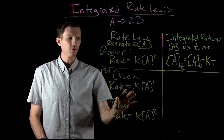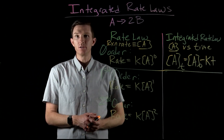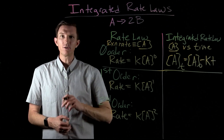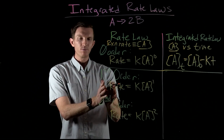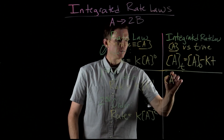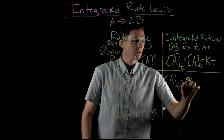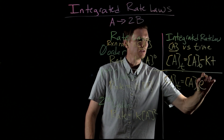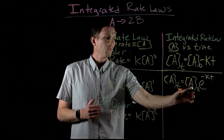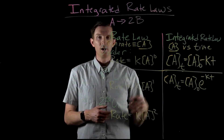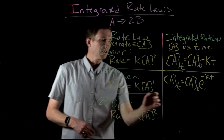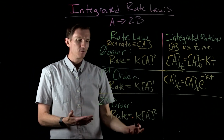For a first order reaction, there is a dependence of rate on the concentration of A, so the way A changes over time is different from the zero order case. Integrating the change in concentration, we get: the concentration of A at some time equals the initial concentration of A times e to the negative KT. As time goes on, there is no longer a linear relationship — there's an exponential relationship between the initial concentration of A and the concentration at some time.